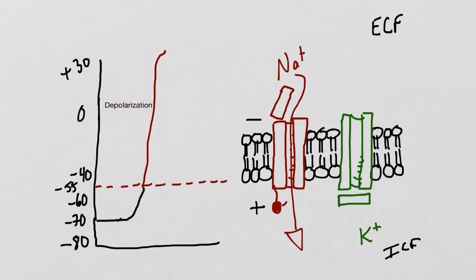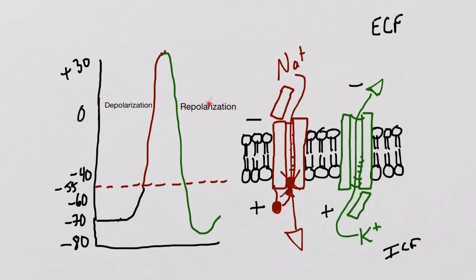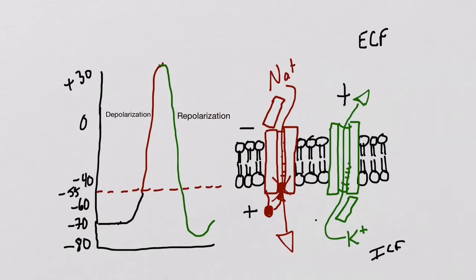When the membrane potential reaches a plus 30 millivolts, the sodium voltage-gated channels will become inactive. At the same time, the potassium voltage-gated channels will open up. The potassium ions will be kicked out due to the electrochemical gradient. The cell membrane will become more negative, and this phase is called repolarization. The poles are reset to positive being on the outside and negative on the inside.